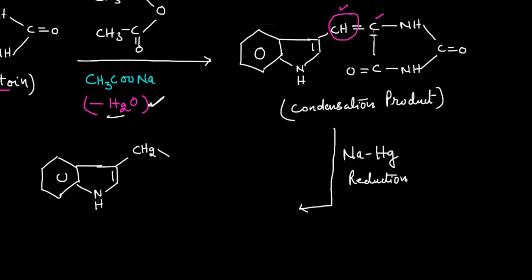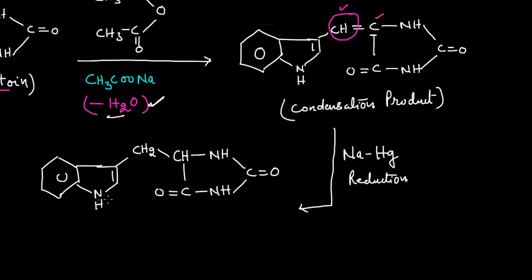On reduction with sodium amalgam, the carbon is converted — this gives CH and CH. The bond is reduced so the double bond converts into CH–CH, with NH and C=O groups remaining in the hydantoin ring.